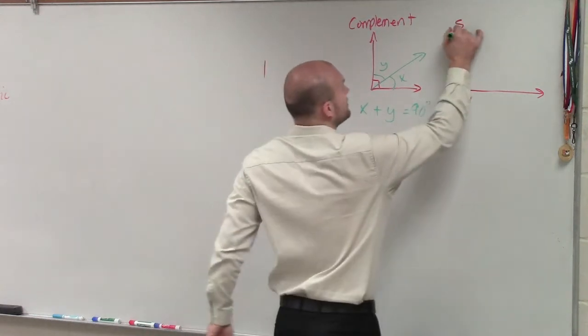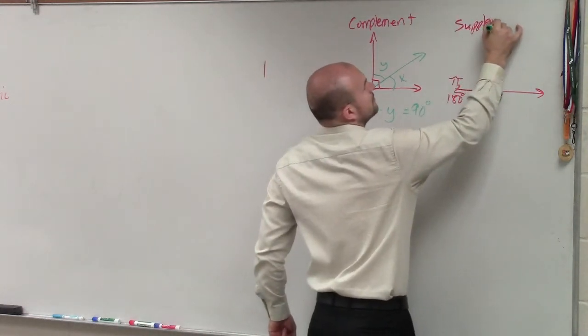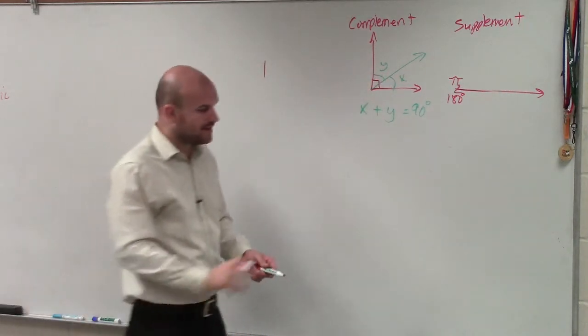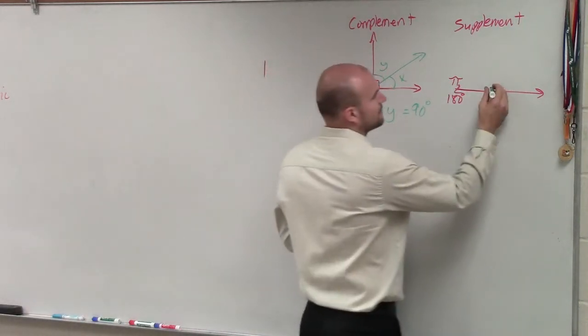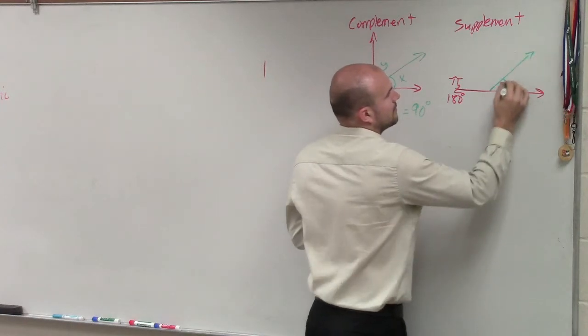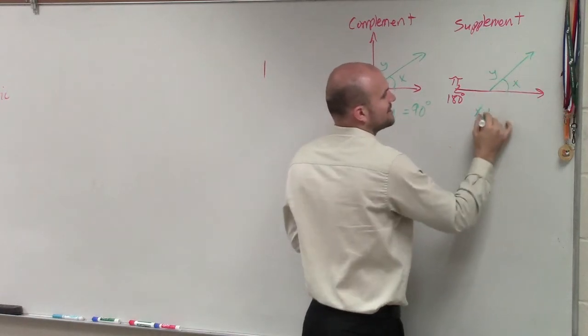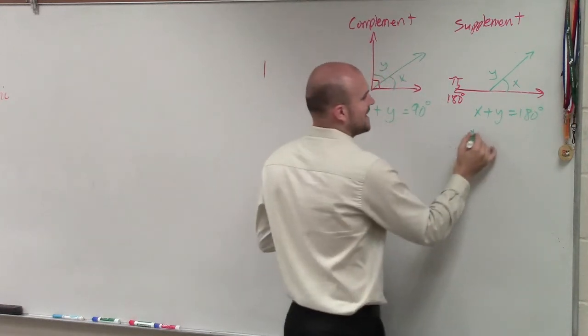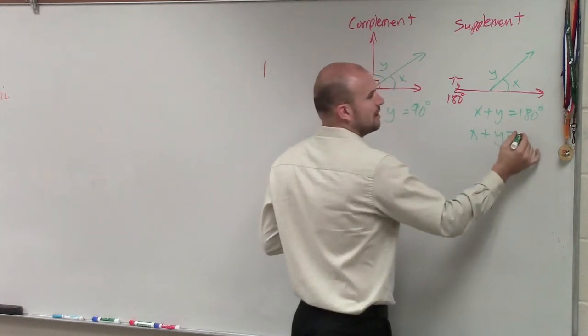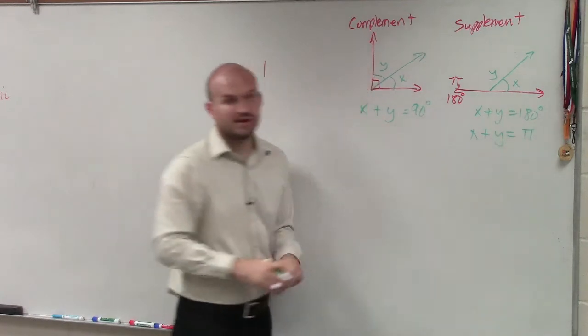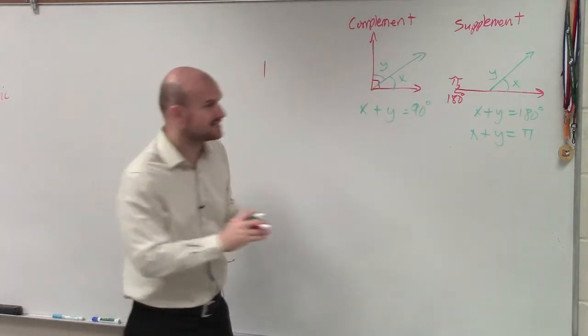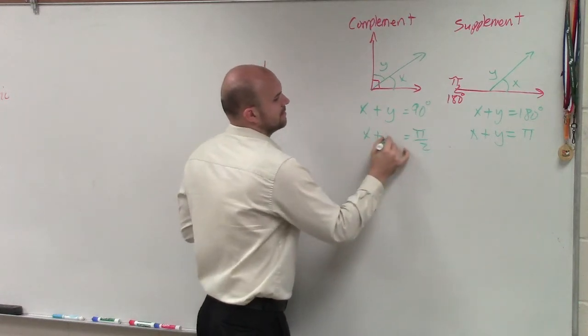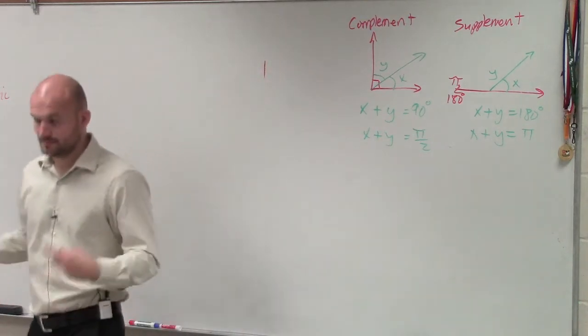The supplement is going to be two angles that add up to 180. So it'd be x plus y equals 180 degrees. But in radians, that's x plus y equals pi. So if 180 is pi, then 90 is going to be pi divided by 2.